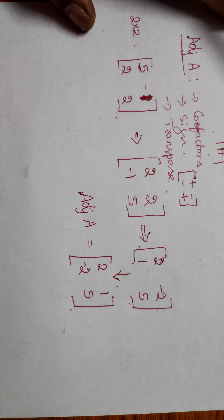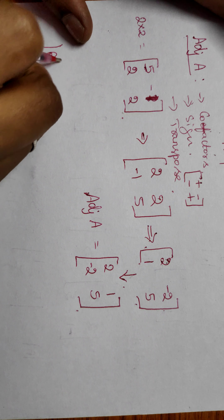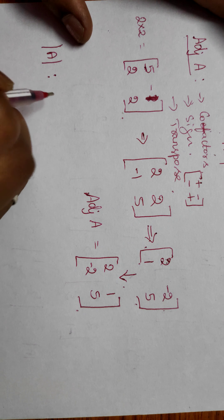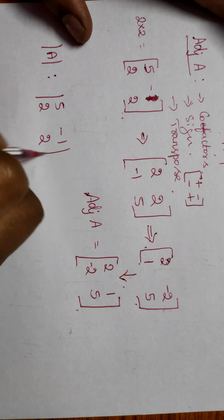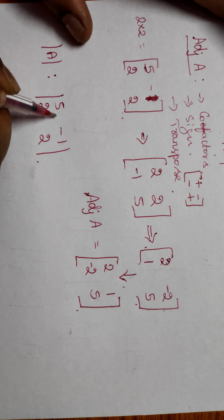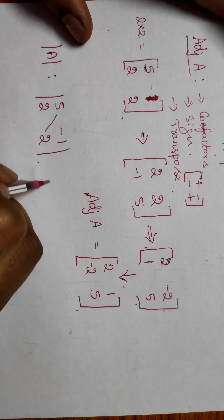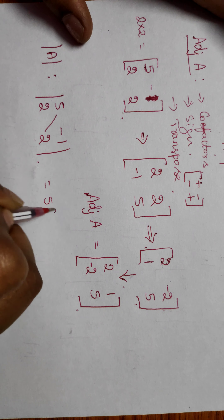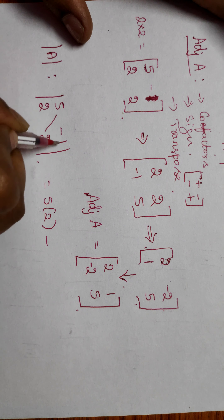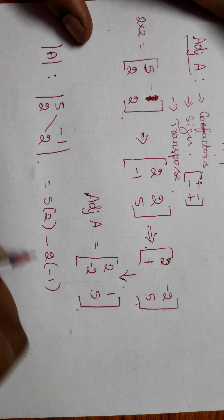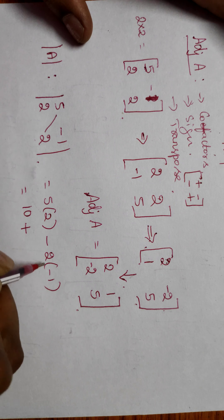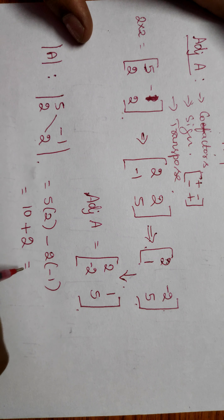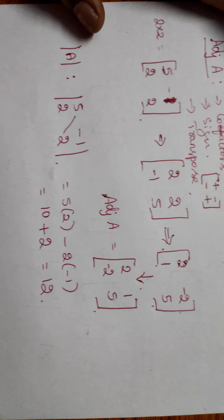Once we find the adjoint of A, we have to find the determinant of A. The given matrix is 5, -1, 2, 2. For the determinant, we perform cross multiplication: 5 into 2, minus 2 into minus 1. That gives 10 minus (negative 2), which equals 10 plus 2, equal to 12. So the determinant of A is 12.